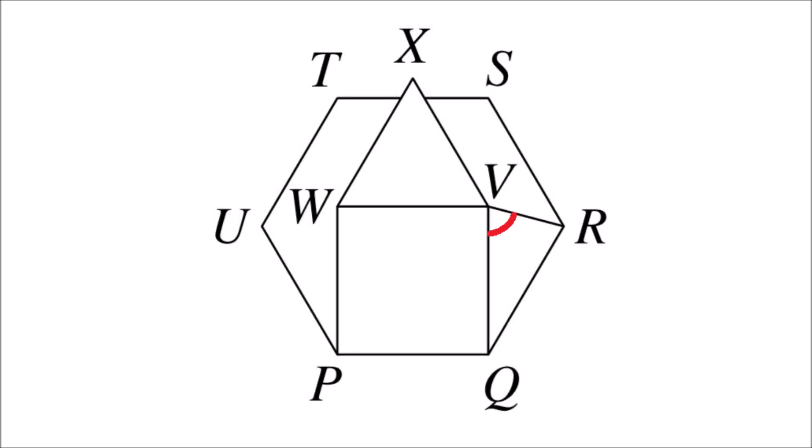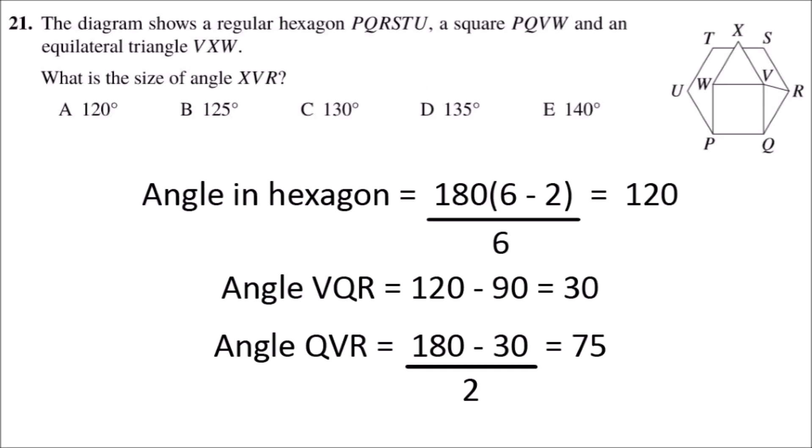Now if you consider VQR as a triangle, you can see that it's isosceles because the side length of the square is the same as the side length of the hexagon, and so that means angle QVR is going to be 180 minus 30 degrees, which gives 150, and then divide by 2. So that's 75 degrees.